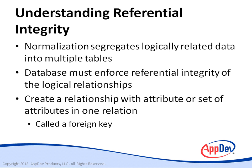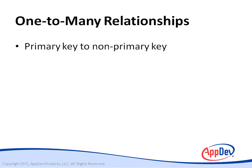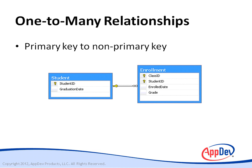SQL Server can enforce several kinds of relationships, including one-to-many, many-to-many, and one-to-one. A one-to-many relationship is based on matching the values in the primary key of one relation with the values in the corresponding foreign key of another relation. Each tuple in the first relation could potentially match many tuples in the second relation. For example, one student could be enrolled in many classes.